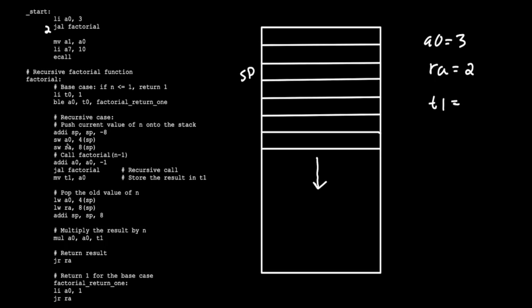We're going to store the value of A0 into stack pointer with an offset of 4 bytes, setting A0 equal to 3 on the stack. Then the next instruction stores the return address into stack pointer plus 8 bytes, so that value is 2. Just a reminder, this value 2 points to the address of this function. The next step is our recursive call: we subtract 1 from A0, so it becomes 2, then jump and link to factorial. This sets the RA register — let's pretend that this is address 70, so we set RA to 70 and jump back up to factorial.